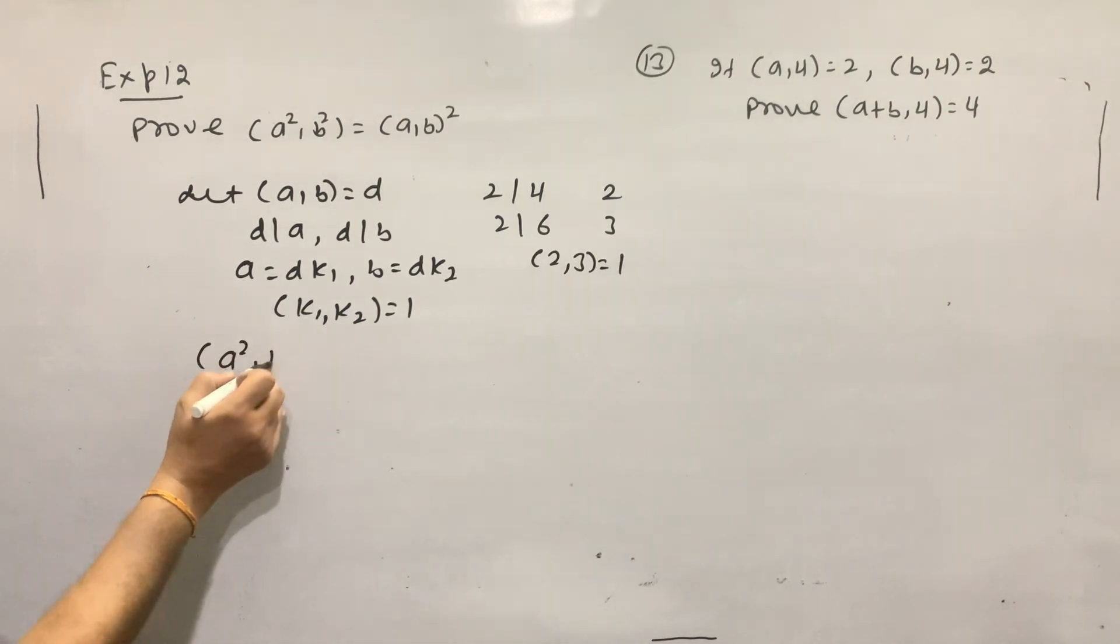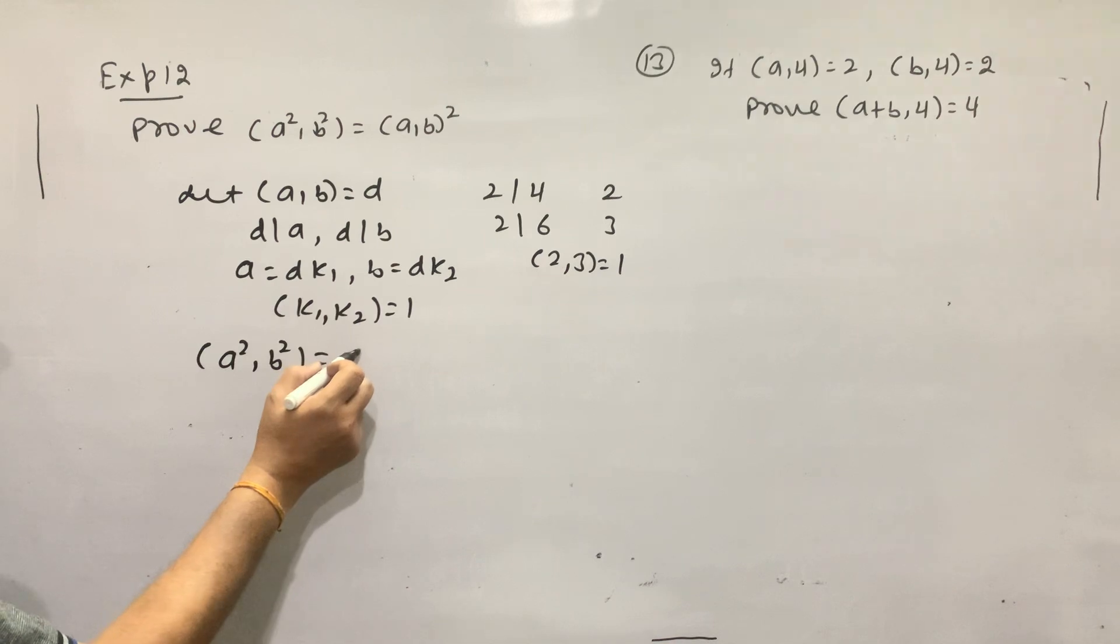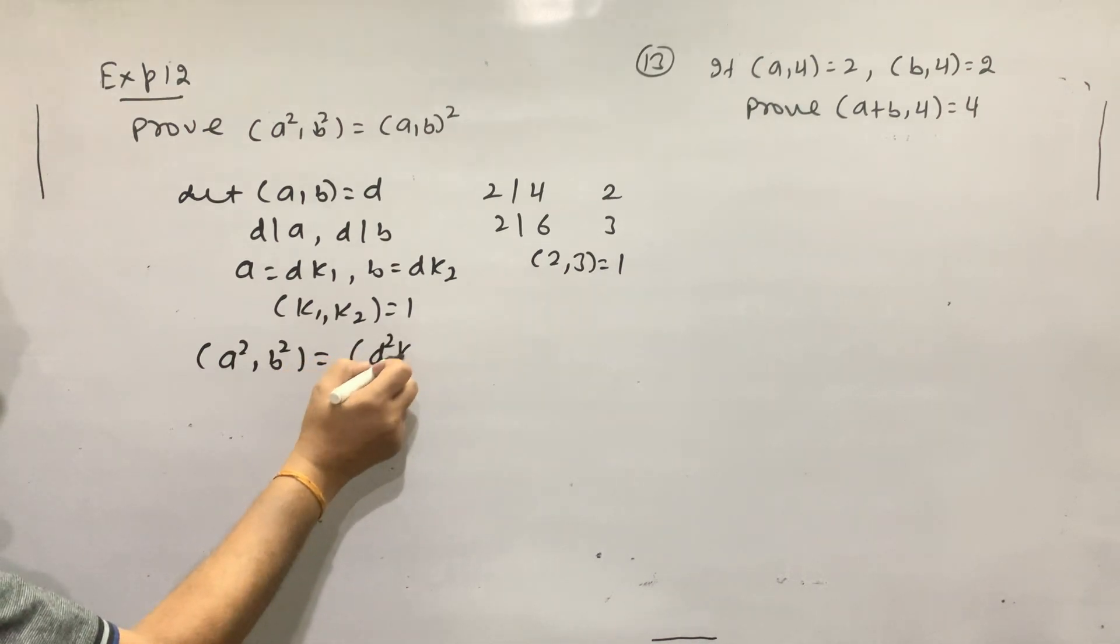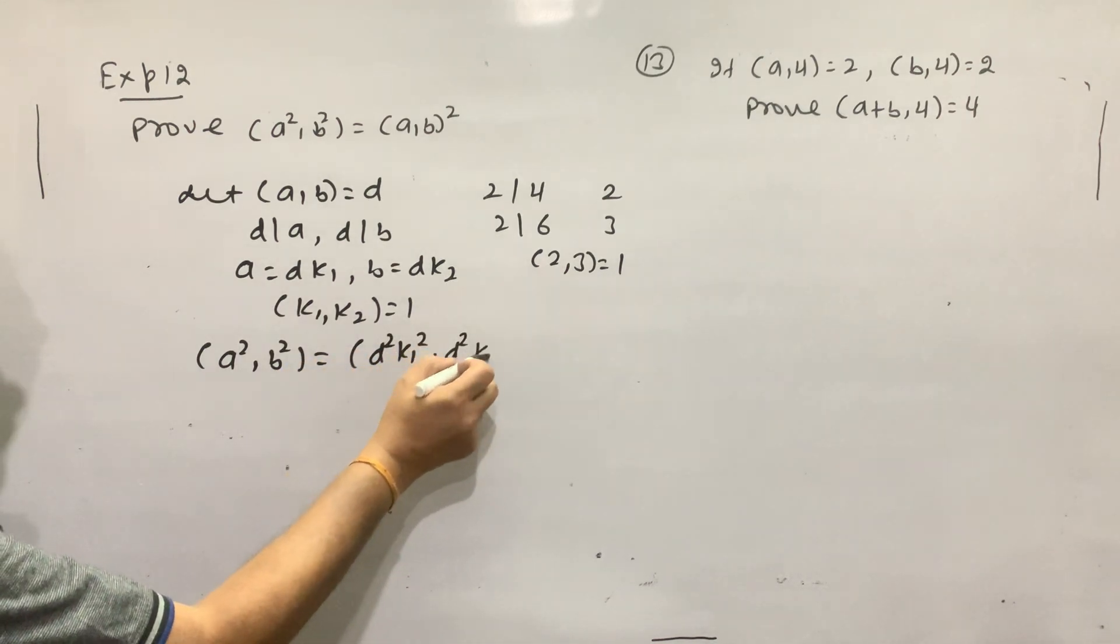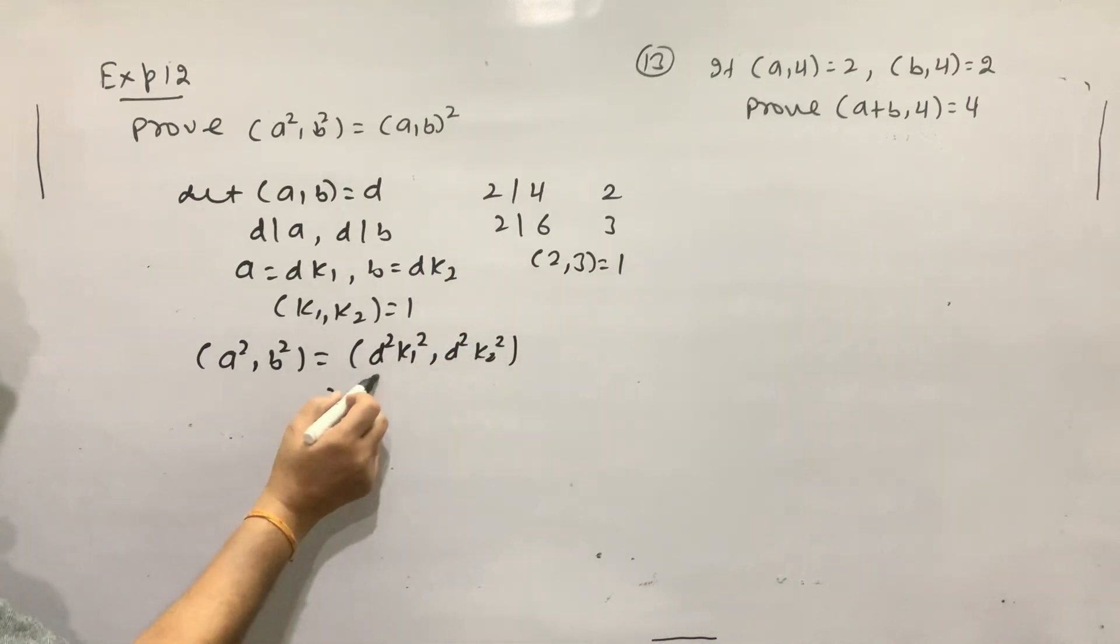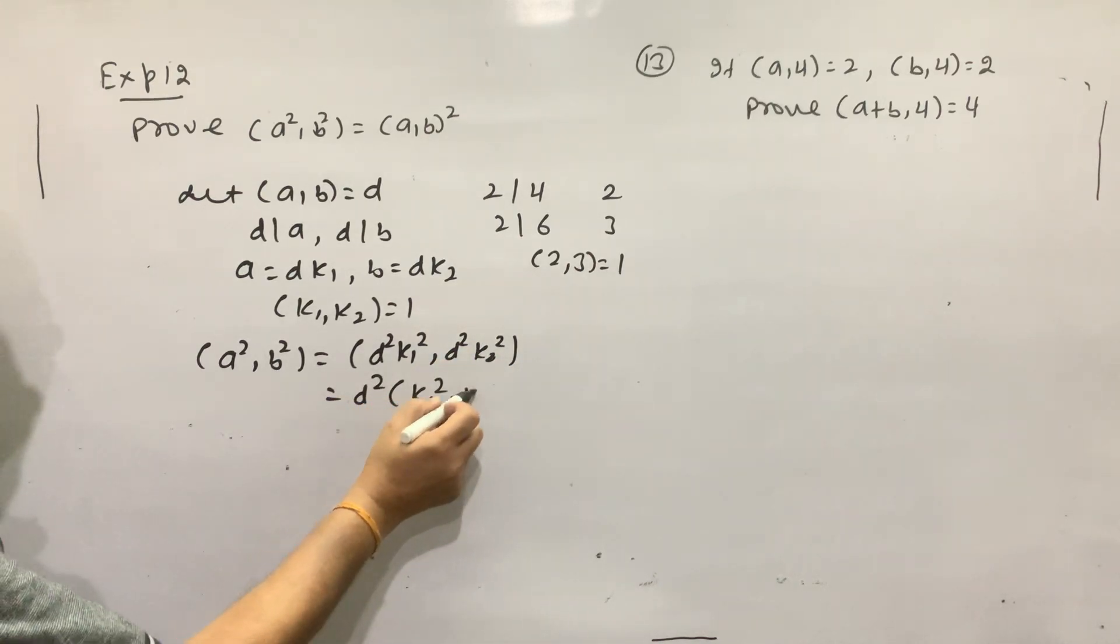Then A scale and B scale, we write D scale times K1 scale, D scale times K2 scale. D scale times K1 scale times K2 scale.